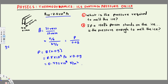The second question asks: if a 150-pound person stands on the ice, is the pressure enough to melt it? First, we have this value in Newton per meter squared. Let's convert it into pounds per inch squared. We know that in one pound we have 4.48 Newtons, so we write one pound over 4.48 Newtons so that the Newton units cancel, giving us pounds per meter squared.